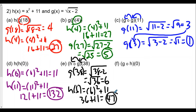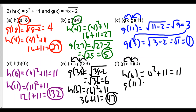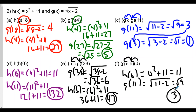Finally, g of h of 0: 0 goes into h, so h of 0 is 0 squared plus 11, equal to 11. Then we plug the 11 into g. So g of 11 is the square root of 11 minus 2, which is the square root of 9, or 3. These values work out nicely, even though we have square roots.